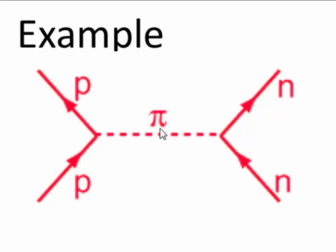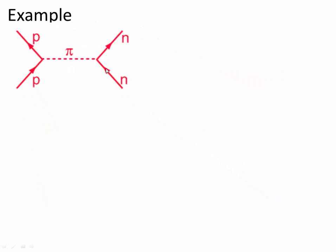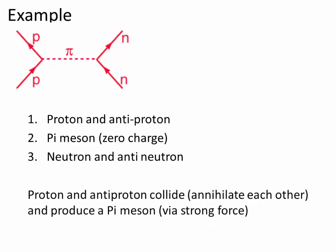Another example: we start with a proton and an antiproton going backwards. We have a pi meson and a neutron and antineutron. So basically the proton and antiproton collide, they annihilate each other, they produce a pi meson via the strong force because the pi meson mediates the strong force. Then that decays into a neutron and an antineutron.